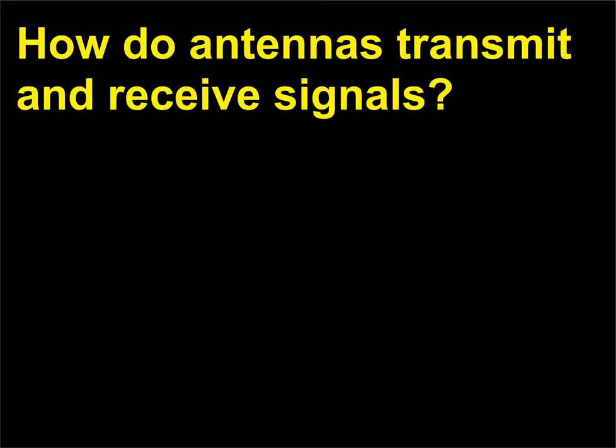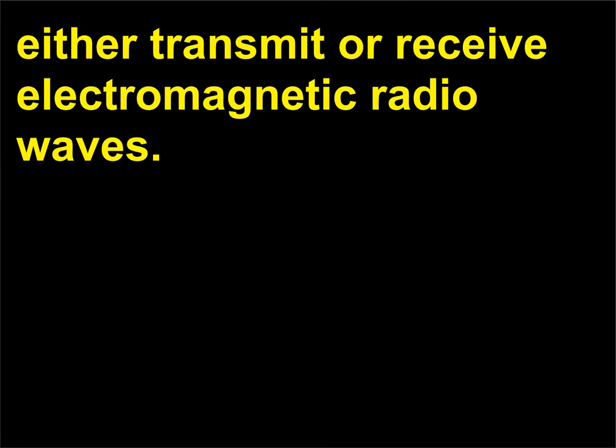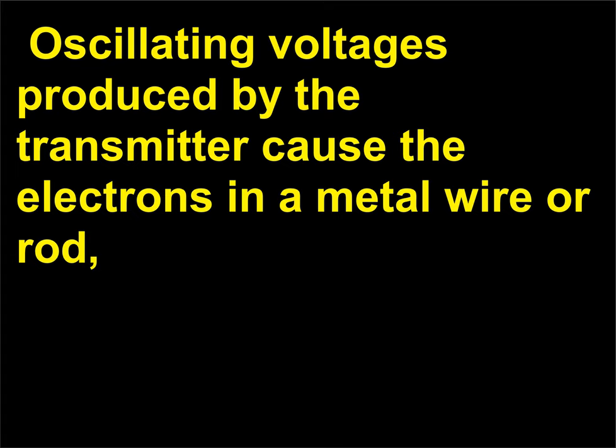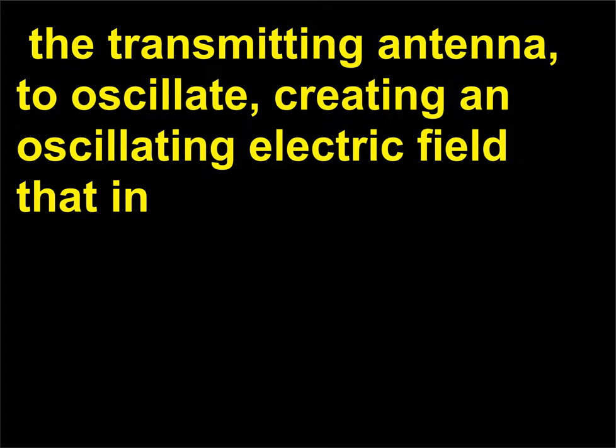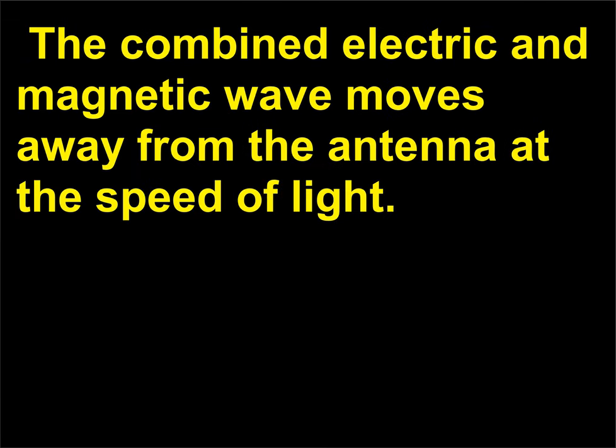How do antennas transmit and receive signals? Antennas for radio and television signals are used to either transmit or receive electromagnetic radio waves. Oscillating voltages produced by the transmitter cause the electrons in a metal wire or rod, the transmitting antenna, to oscillate, creating an oscillating electric field that in turn creates an oscillating magnetic field that creates another oscillating electric field. The combined electric and magnetic wave moves away from the antenna at the speed of light.